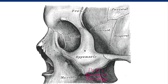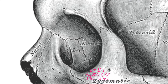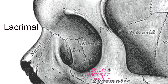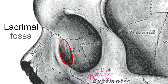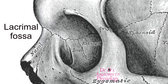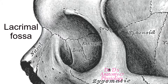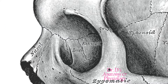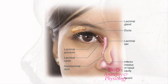Let's take another look at the same bone using this figure from Gray's Anatomy. Zooming in, we can see the lacrimal bone and the lacrimal fossa. Notice that it's not only the lacrimal bone that contributes to the lacrimal fossa — part of the frontal process of the maxilla also contributes to it. Again, the lacrimal fossa is going to accommodate the lacrimal sac.